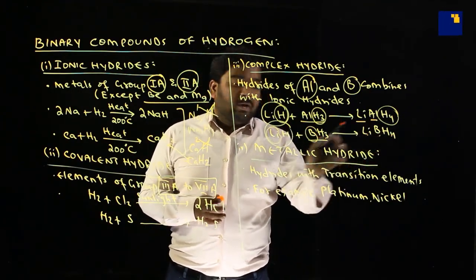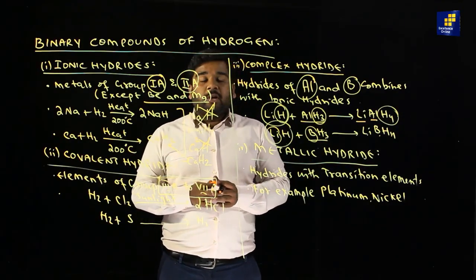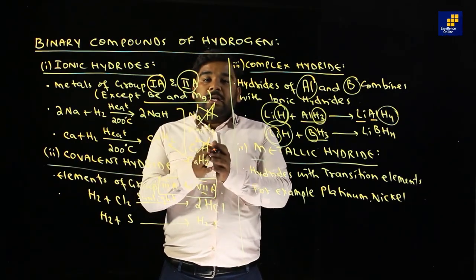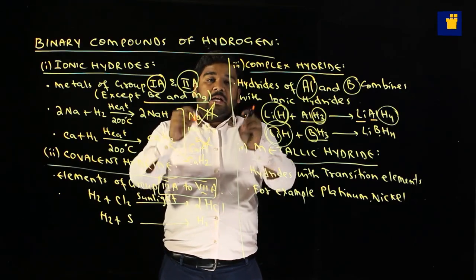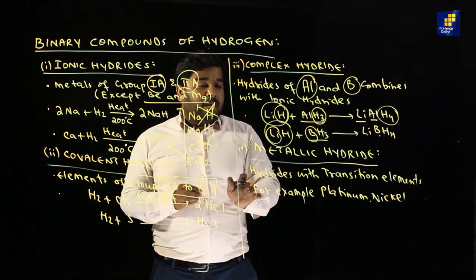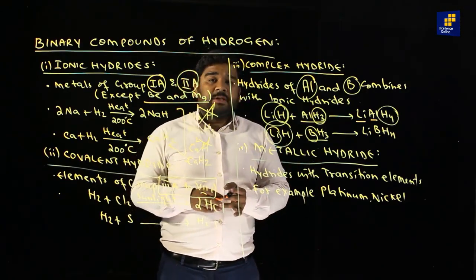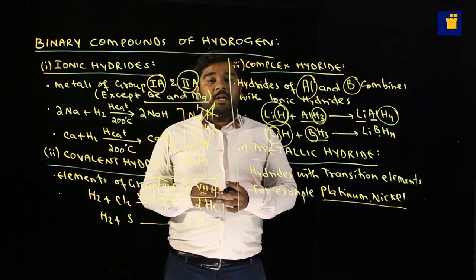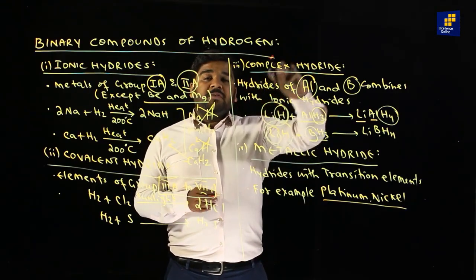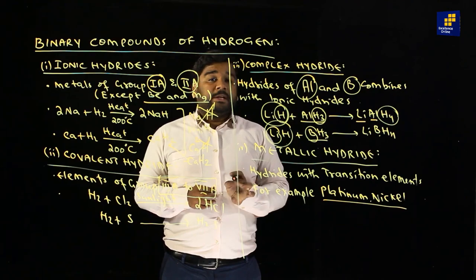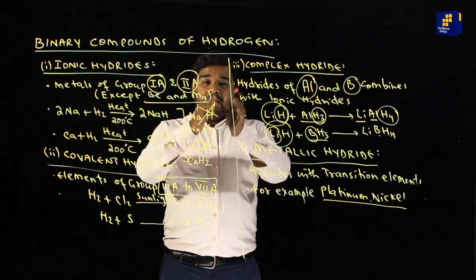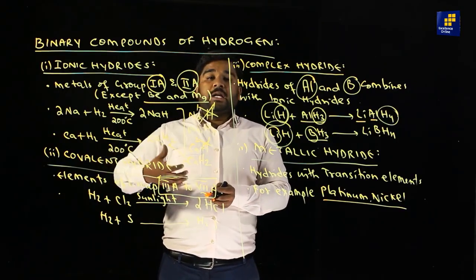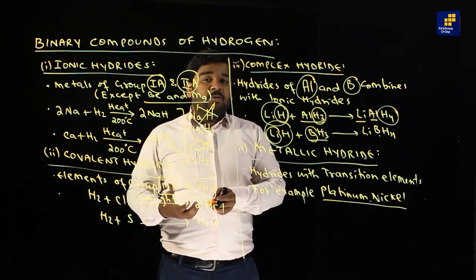Type 3 है: metallic hydrides — कुछ transition metals हैं जिनमें interstitial space होता है; इस space में hydrogen जाकर bond form करता है, जिसे metallic hydride या transition hydride कहते हैं। Example: platinum और nickel। जब भी hydrogenation reaction होता है, arrow पर 150°C और platinum या nickel लिखते हैं — इसका मतलब है कि metal को वहाँ रखकर heat करने पर उसके अंदर का hydrogen बाहर निकलना शुरू होता है।